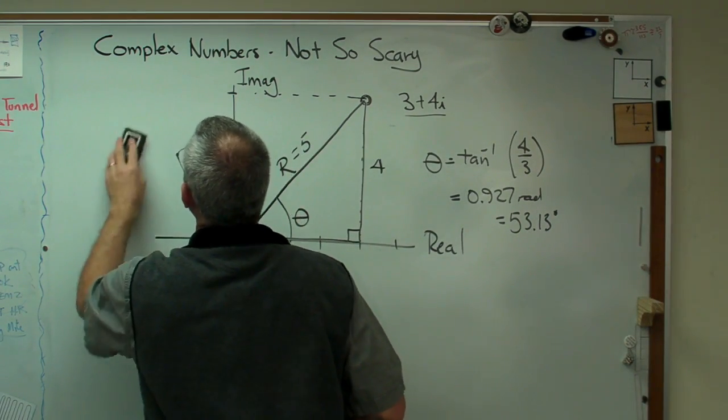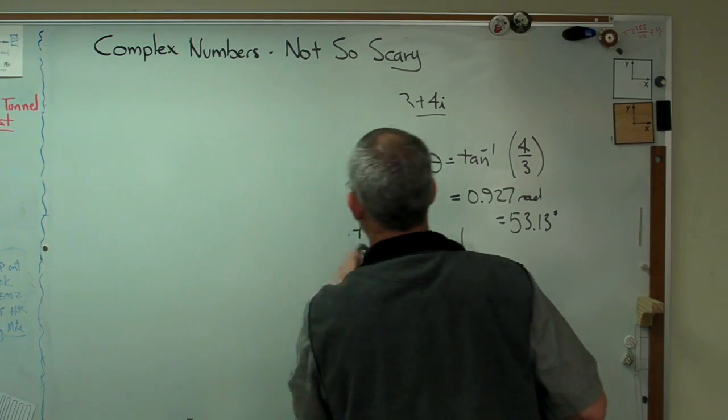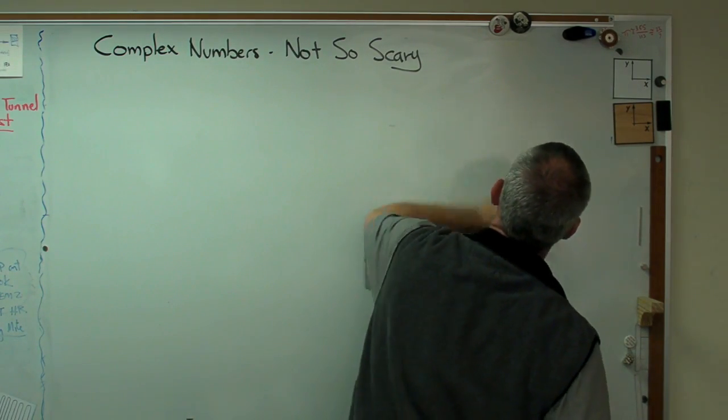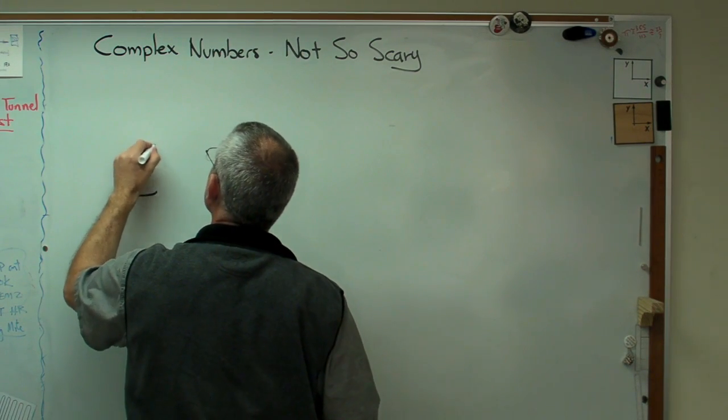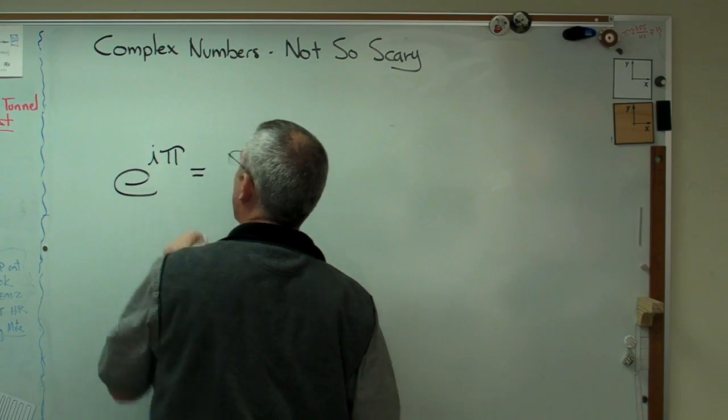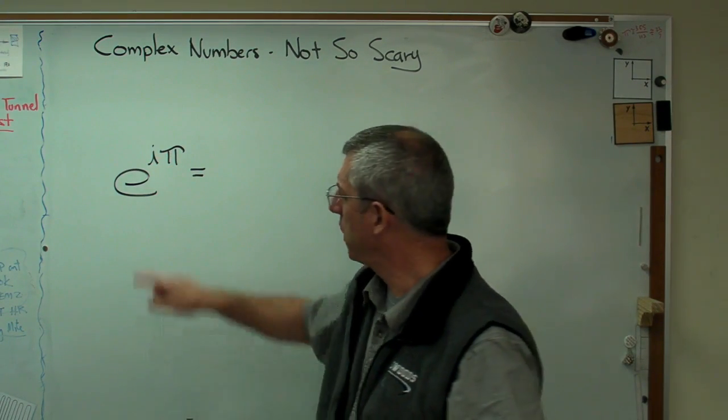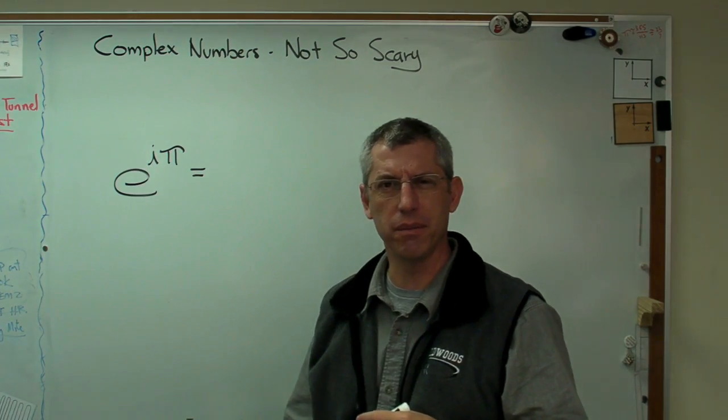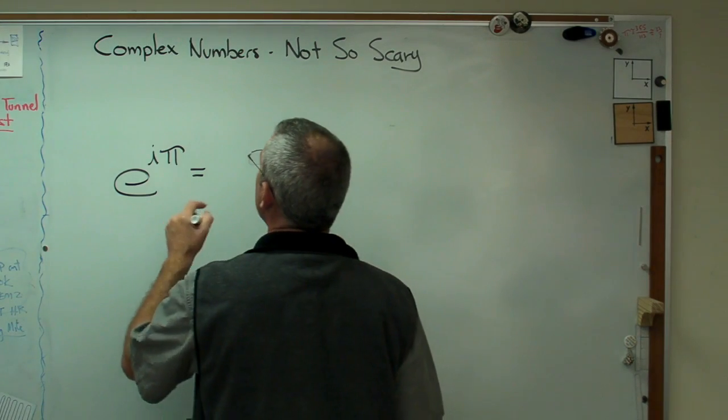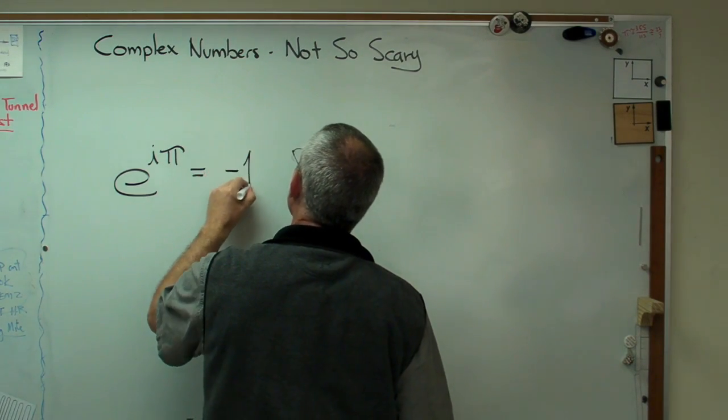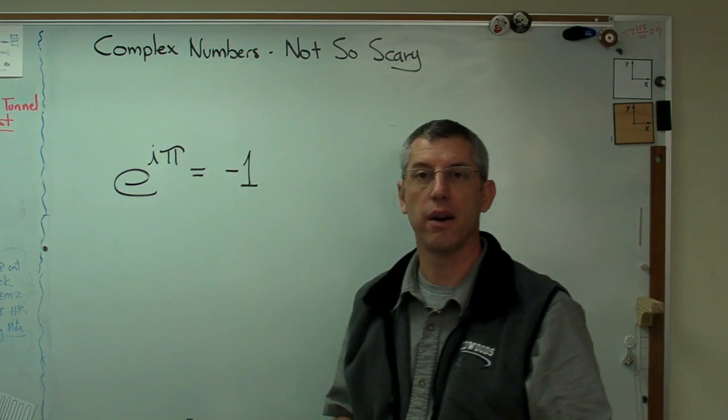All right. Well, if you don't believe me, try this on your calculator. Get your scientific calculator out and do this. Take e and raise it to the i pi power. Raising a real number to a complex power, could that be legitimate? Could that be okay? You bet it's okay. And that turns out to be minus one. If you take e to the i pi power, you get minus one.